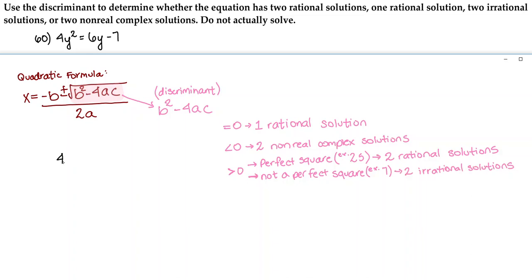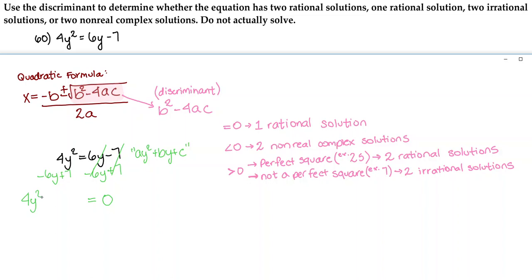Here in number 60, we have 4y squared equals 6y minus 7. Let's figure out what our a, b, and c are. First we have to put this in ay squared plus by plus c form and set everything equal to 0. Let's subtract 6y and add 7 to both sides, canceling everything on the right, leaving us with 4y squared minus 6y plus 7 equals 0. So our a is 4, our b is negative 6, and our c is 7.